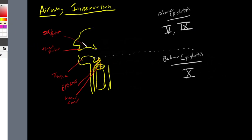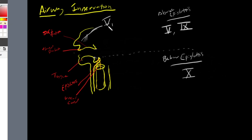Let's start with one of the initial parts of our airway, which is the nasal mucosa. The anterior portion of the nasal mucosa is supplied by the ophthalmic branch of our trigeminal nerve, cranial nerve 5. I'm labeling this V1, or 5 sub 1.